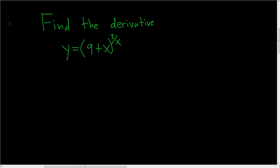In this video, we're going to find the derivative of y equals the quantity 9 plus x to the 3 over x. So because we have a variable in the numerator and a variable in the denominator, what we'll do to make this easier is we'll take the natural log of both sides.